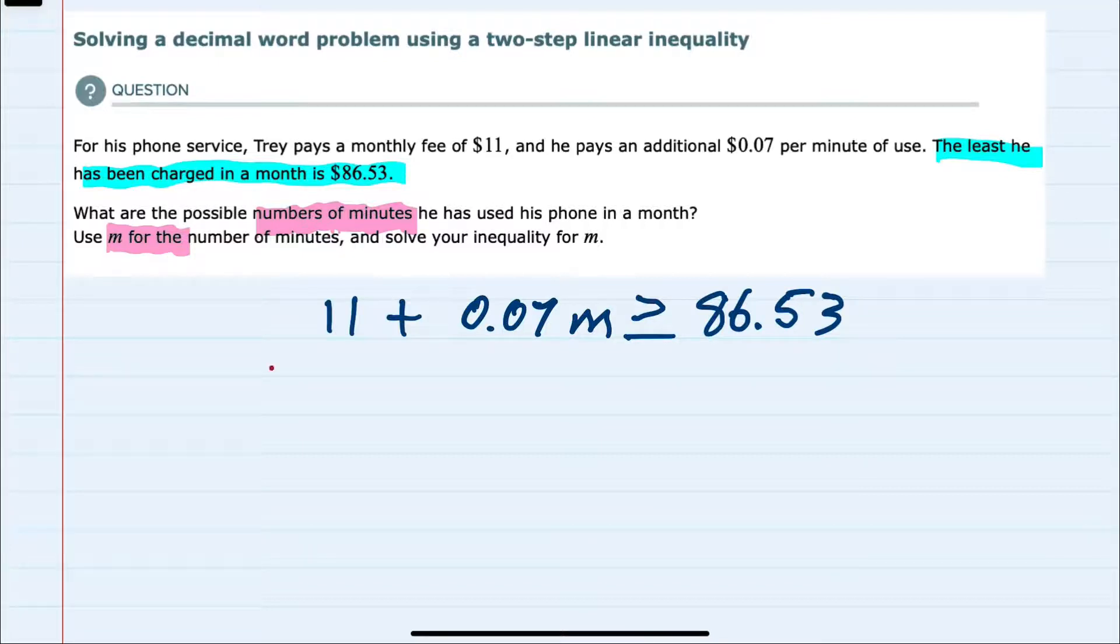Solving for M, I would first subtract the 11 from both sides of the equation. Since I'm trying to get the M by itself, this would cancel that 11 on the left-hand side and leave me with 0.07M is greater than or equal to.